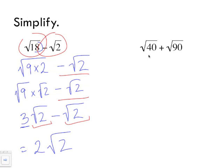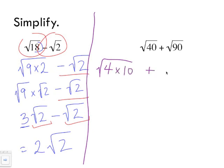Let's look at the next example. You might think it's not possible right away, but you want to find numbers that can be square rooted so they can be simplified — you may need to play around with the numbers a bit. Another way of writing radical 40 is radical 4 times 10, and radical 90 is radical 9 times 10, since we need a perfect square factor times 10 in each.